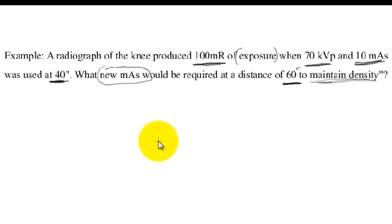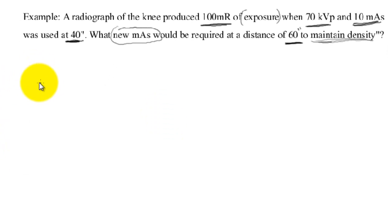They're asking you to maintain density and they want to know the new mAs. A light bulb should pop up saying density maintenance formula. So let's look at our formula. We're going to use mAs1 over mAs2 equals distance 1 squared, this is directly proportional to the square of the distance, not inversely, over d2 squared.